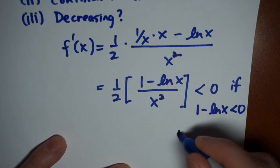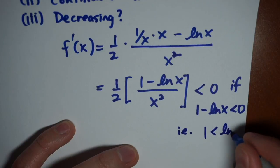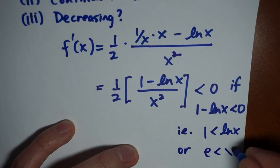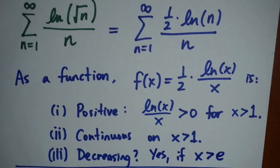Now we can solve this. If you add log x to both sides, and you take e to both sides, what you find out is that one has to be less than log x, which means e has to be less than x. So for x values big enough, in this case bigger than e, we do have a decreasing function.